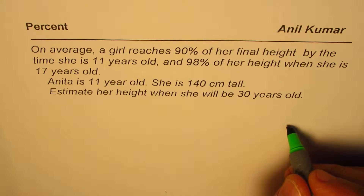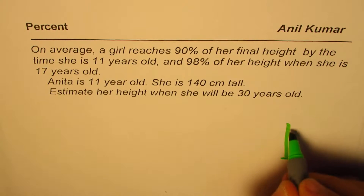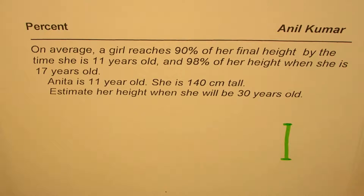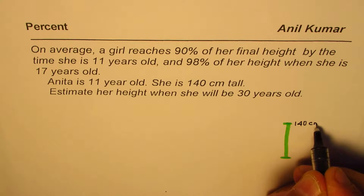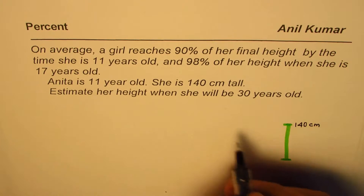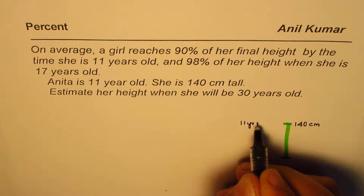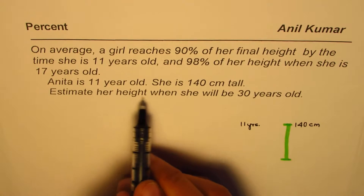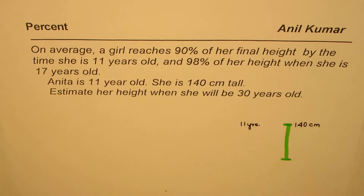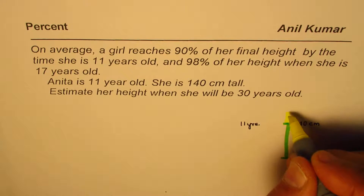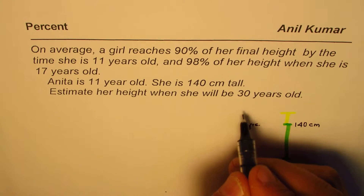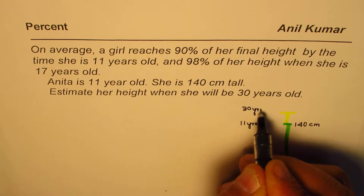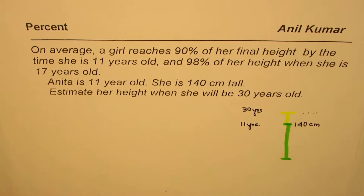What we are given here is that the height of Anita is 140 centimeters. This is when Anita is 11 years old. We need to estimate her height when she will be 30. So she is going to grow — we have to figure out what her height should be at age 30.